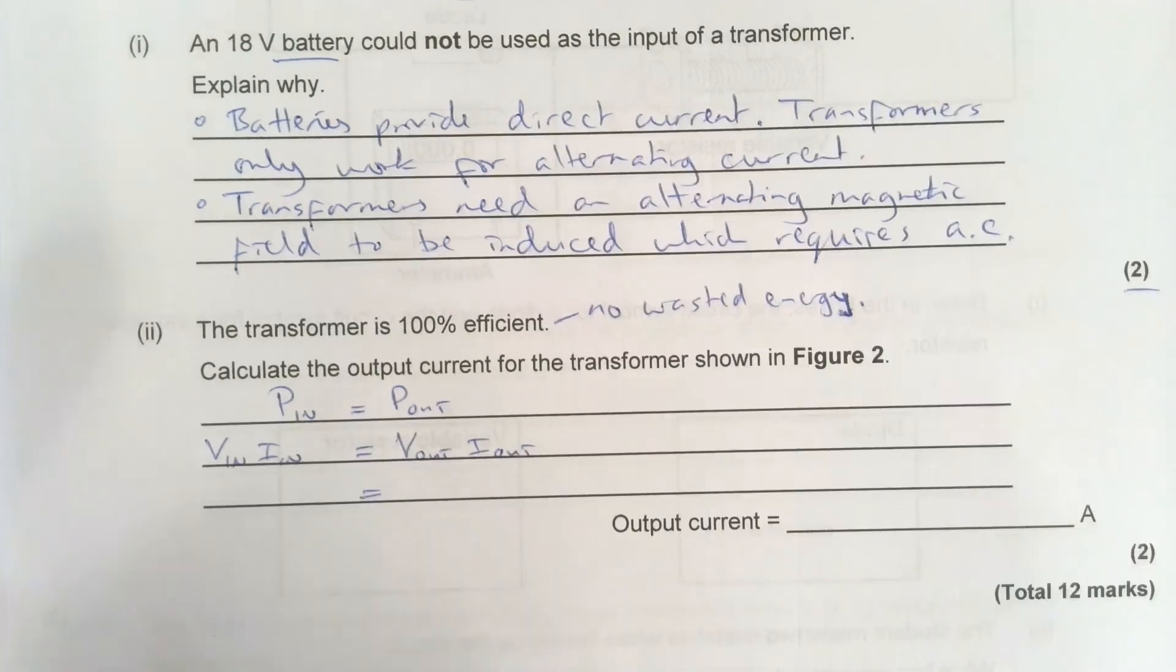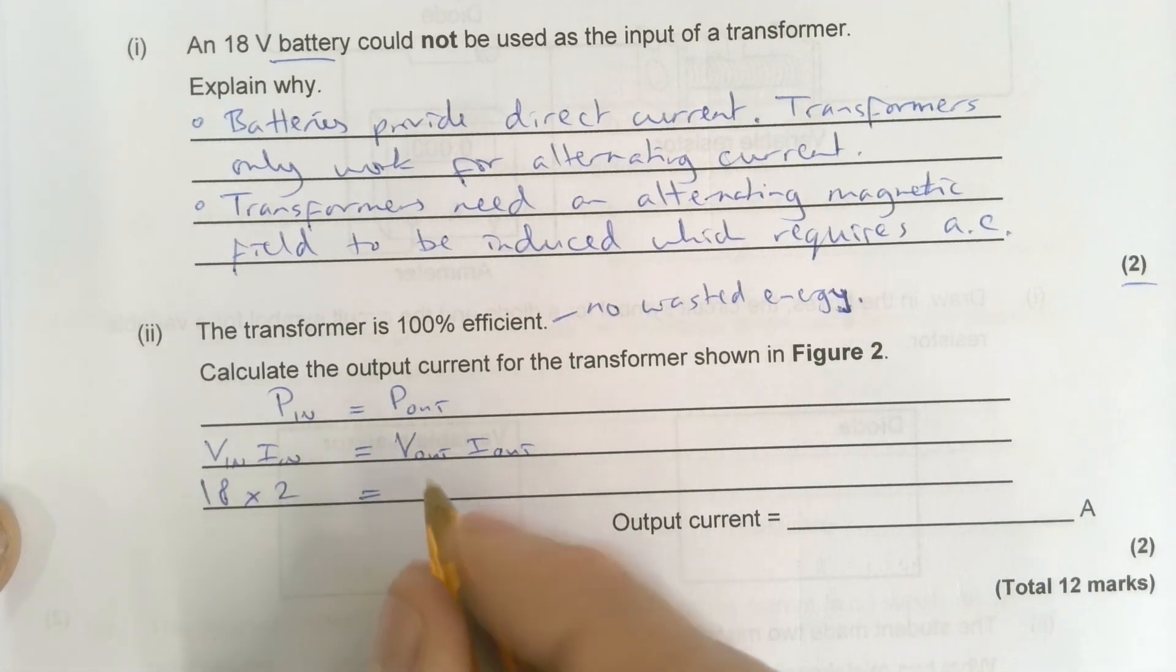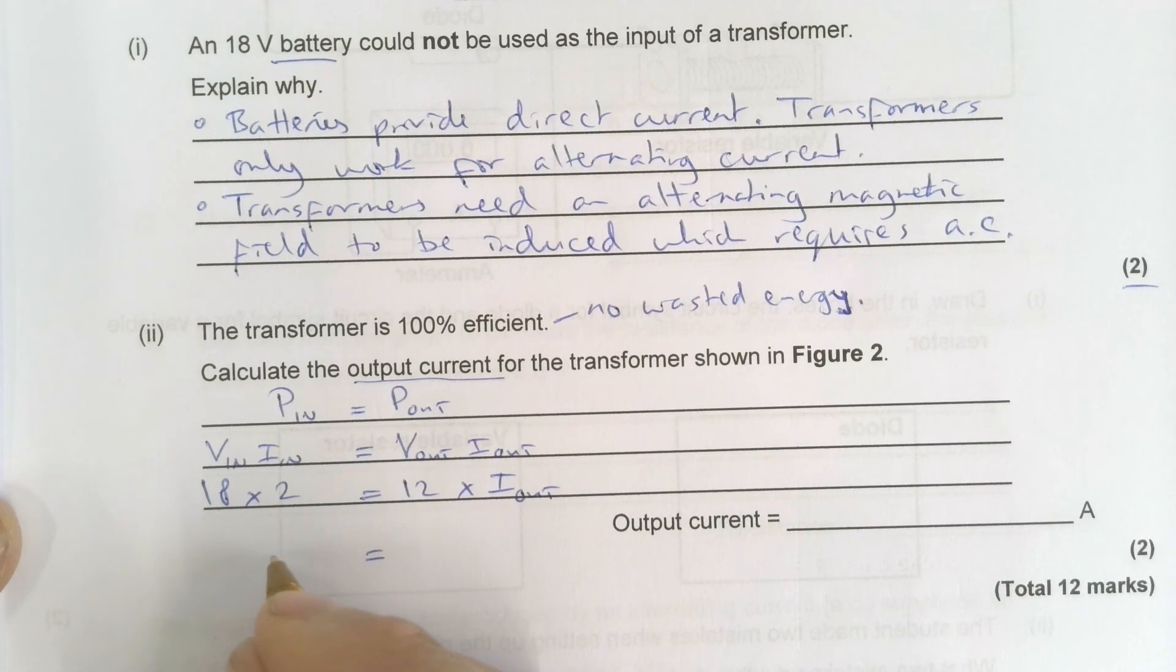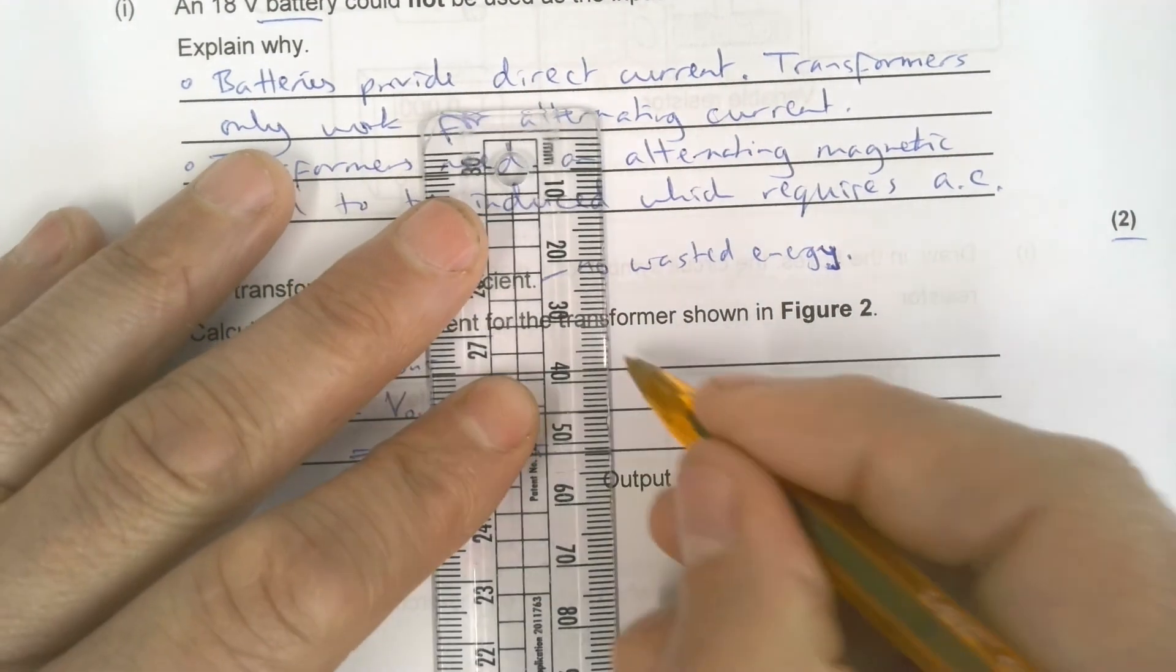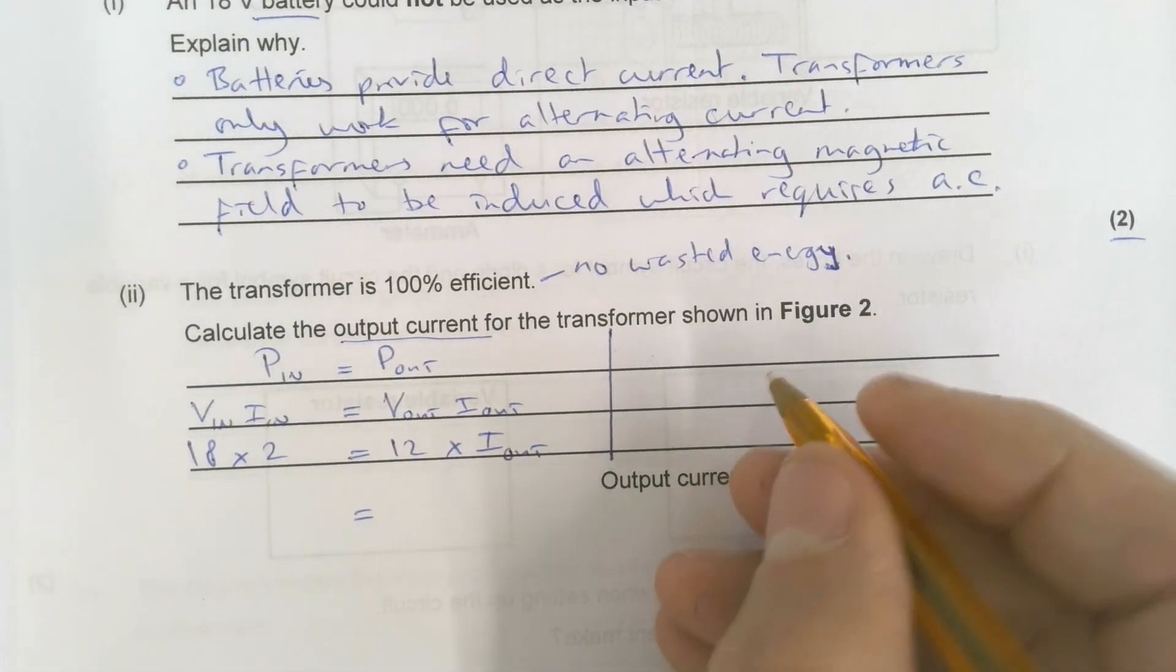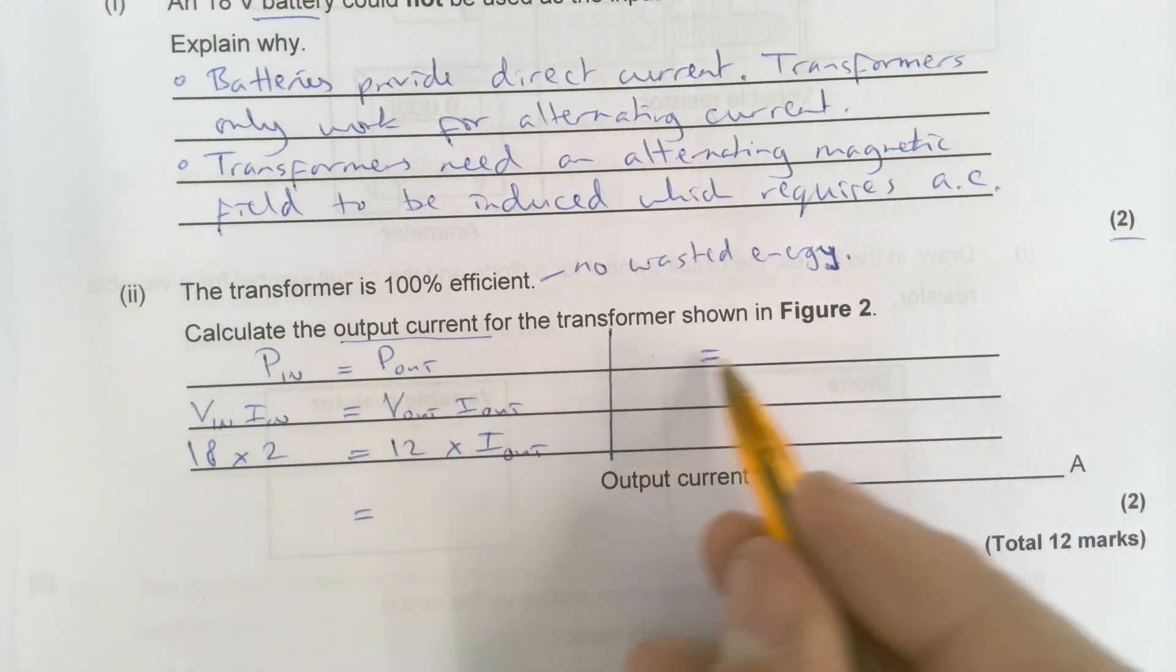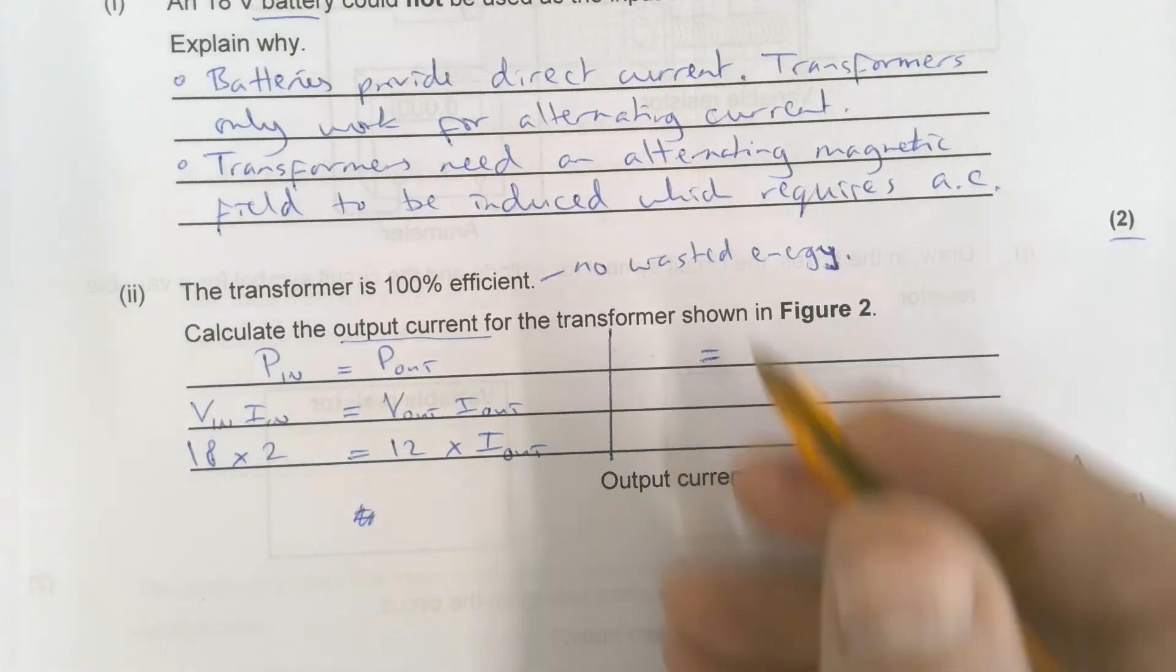V in I in must equal V out I out, which means that the potential difference in is 18 times 2 must equal 12 times, and I don't know what the output current is, times I out. So I'm just going to do some maths before I work it out. I might do actually I'm running out of space and I want more space but I don't want to get marks dropped because I put equal signs over here.